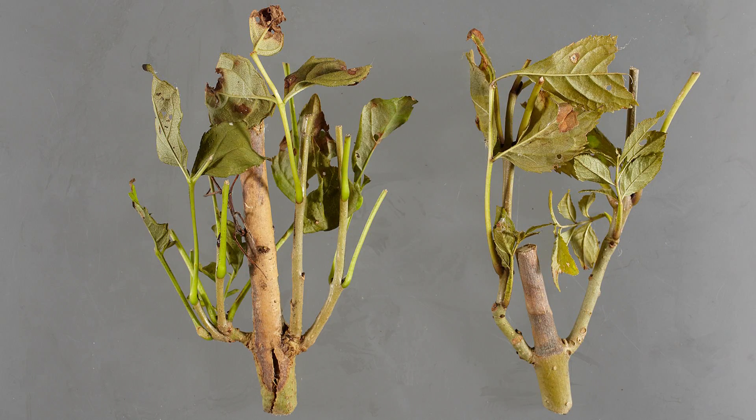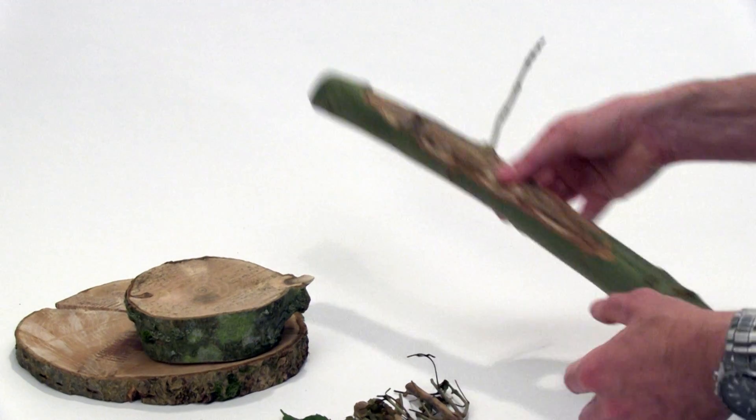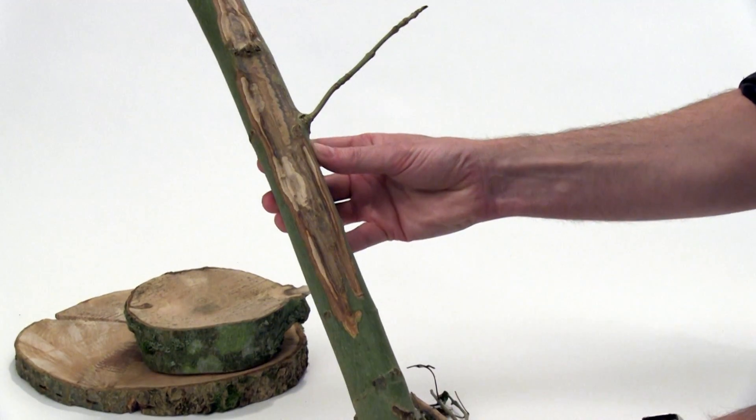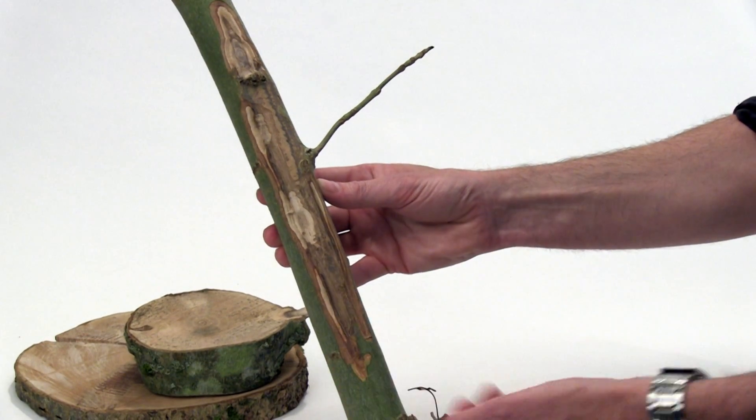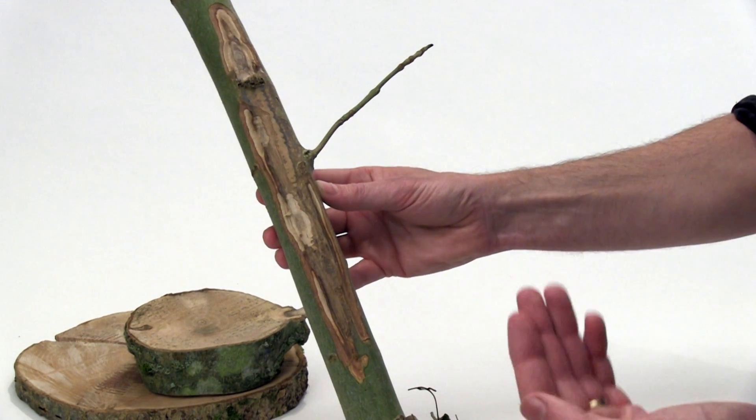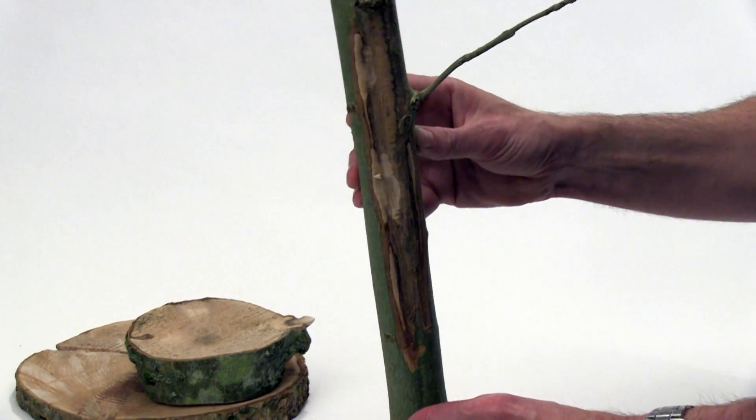That lesion can then extend and it can actually extend into the wood itself, deeper and deeper. And here we have an example of one where the outer bark has been removed, but you can see the lesion has extended quite extensively into this tree.